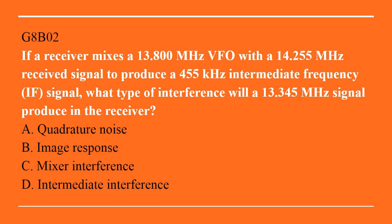G8B02: If the receiver mixes a 13.800 MHz VFO with a 14.255 MHz received signal to produce a 455 kHz intermediate frequency, what type of interference will a 13.345 MHz signal produce in the receiver? A. Quadrature noise. B. Image response. C. Mixer interference. D. Intermediate interference. Correct answer is B. Image response.